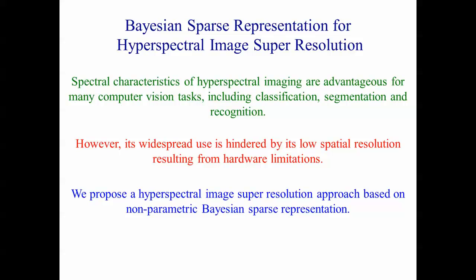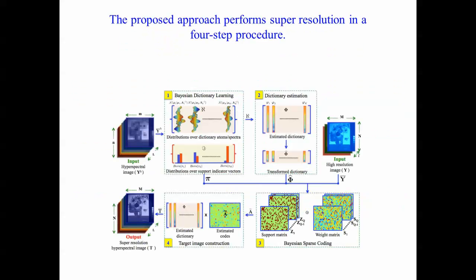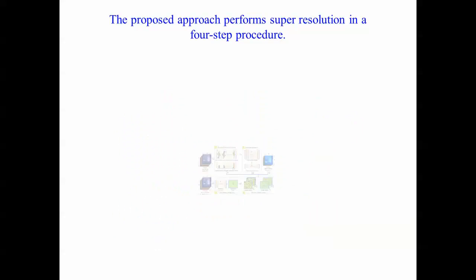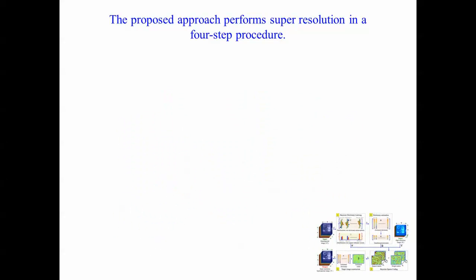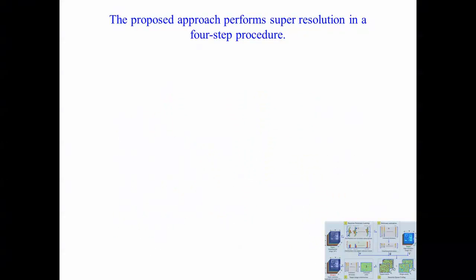In this work, we propose a hyperspectral image super-resolution approach based on nonparametric Bayesian sparse representation. The proposed approach performs hyperspectral super-resolution in a four-step procedure, shown in the slide. Each of these steps is discussed in the following slides.